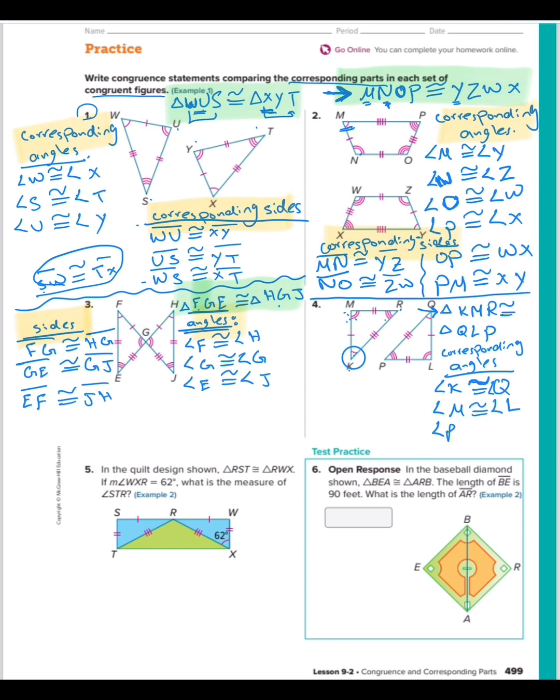Angle R with three line, congruent with angle. We finish angles, now the sides.